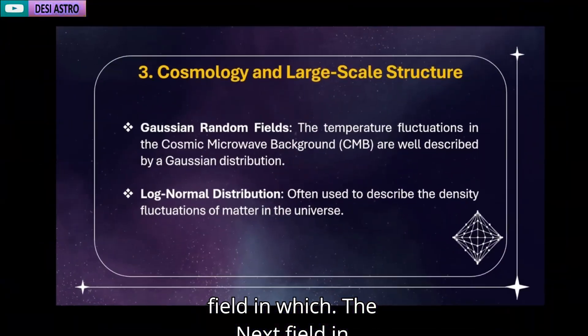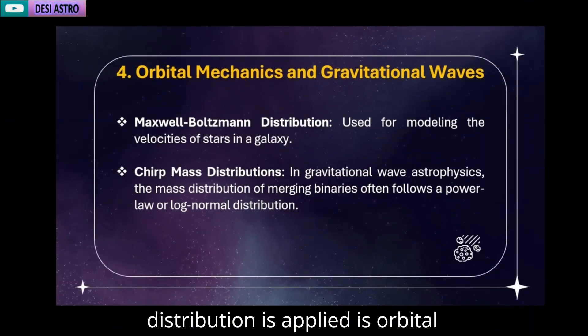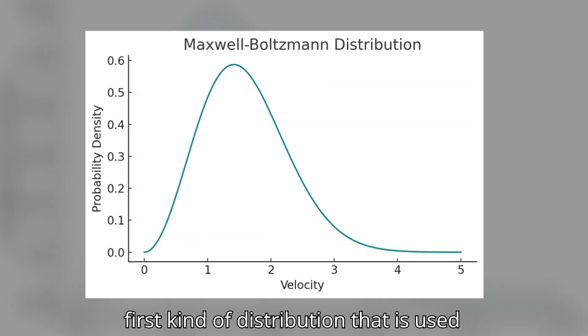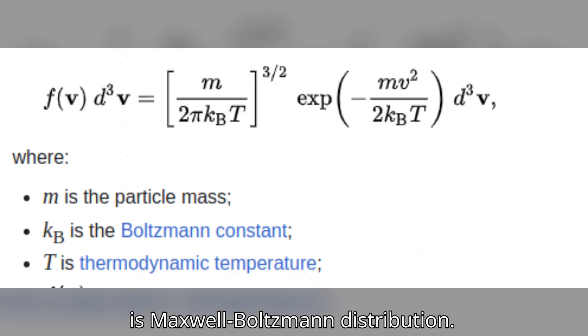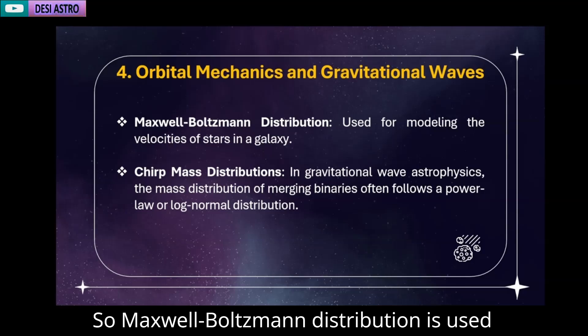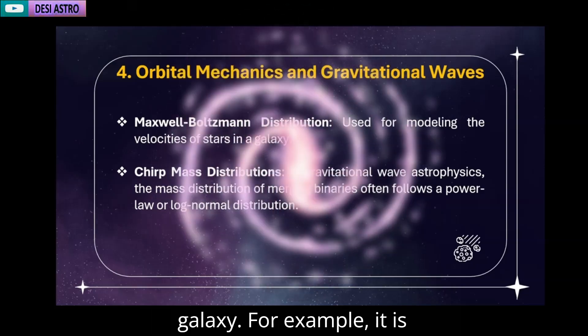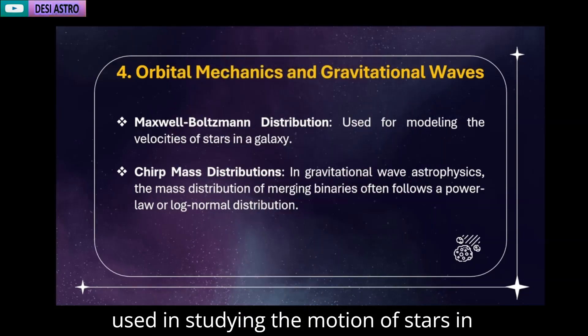Next field in which the distribution is applied is orbital mechanics and gravitational waves. The first kind of distribution that is used is Maxwell-Boltzmann distribution. Maxwell-Boltzmann distribution is used for modeling the velocities of stars in a galaxy. For example, it is used in studying the motion of stars in clusters.